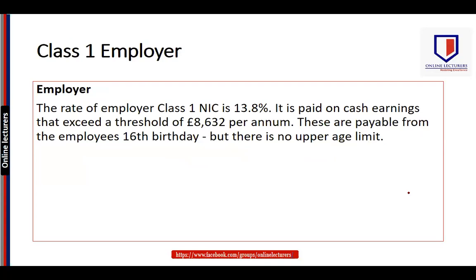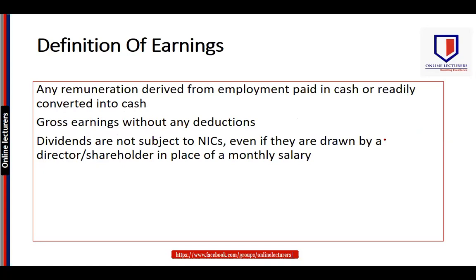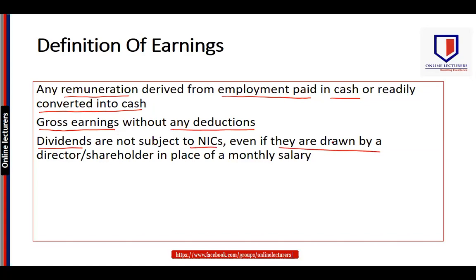As far as Class 1 employer NIC is concerned, the rate is 13.8%, paid on cash earnings exceeding a threshold of £8,632 per annum. These are payable from the employee's 16th birthday with no upper age limit. The definition of earnings is very important: any remuneration derived from employment, paid in cash or readily convertible into cash, falls within the definition of earnings, taken as gross earnings without any deductions. Dividends are not subject to NIC even if drawn by a director in place of salary.